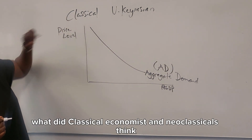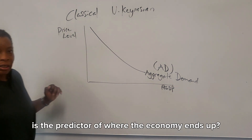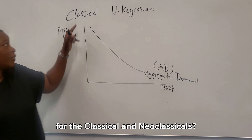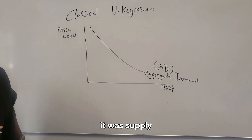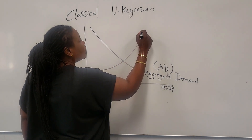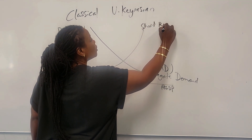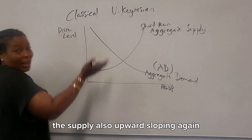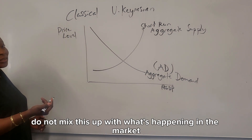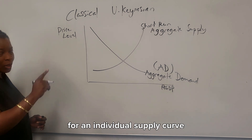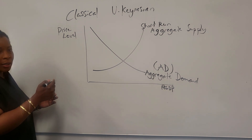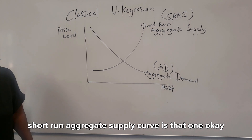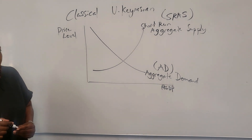What did classical and neoclassical economists think is the predictor of macroeconomic movement? That's right — it was supply. When we look at supply we have the short-run aggregate supply curve. Again, do not mix this up with an individual supply curve — this is for the entire economy. We denote it as SRAS, the short-run aggregate supply curve.